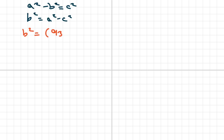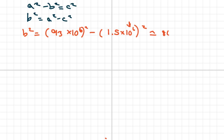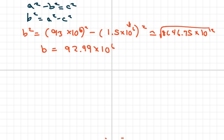B² equals A² minus C², which is (93 × 10⁶)² minus (1.5 × 10⁶)². When you calculate that out, you get 8646.75 × 10¹². Taking the square root of both sides gives B equals approximately 92.99 million miles.